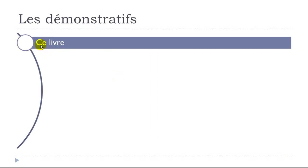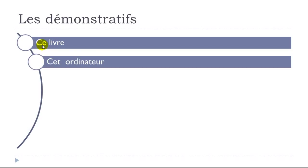One example: 'ce livre' — this book. Livre is masculine and doesn't start with a vowel sound, so it's the basic 'ce.' 'Ce livre.' Now 'ordinateur' — computer — is also masculine, but it starts with O, a vowel, so 'ce ordinateur' wouldn't work. We use the second option: 'cet ordinateur' — this computer.